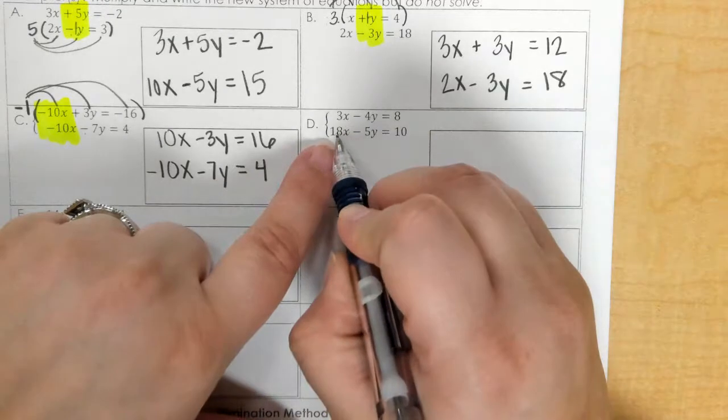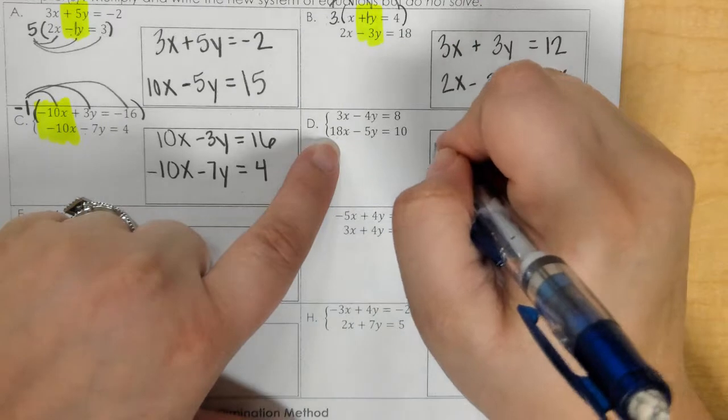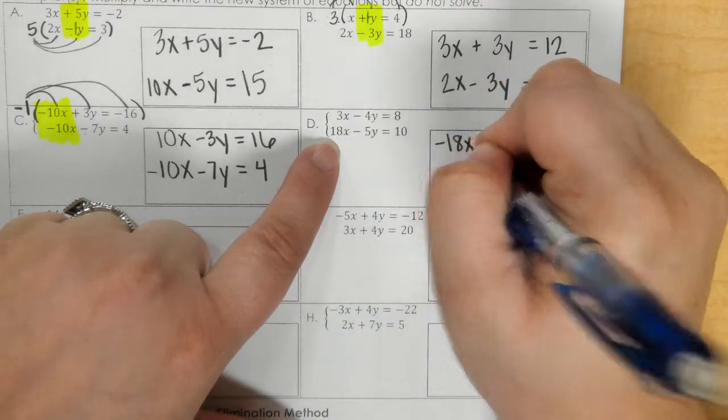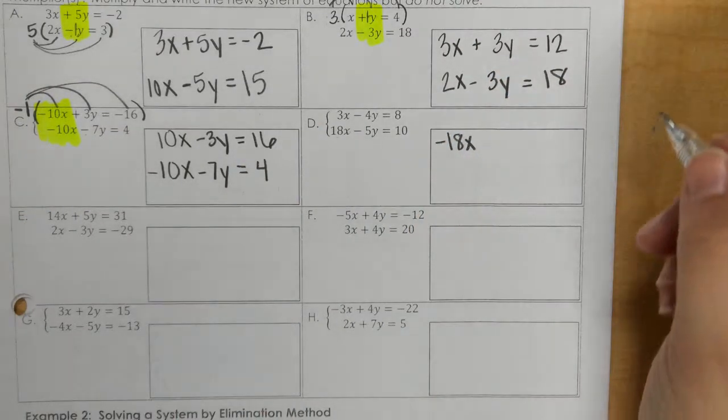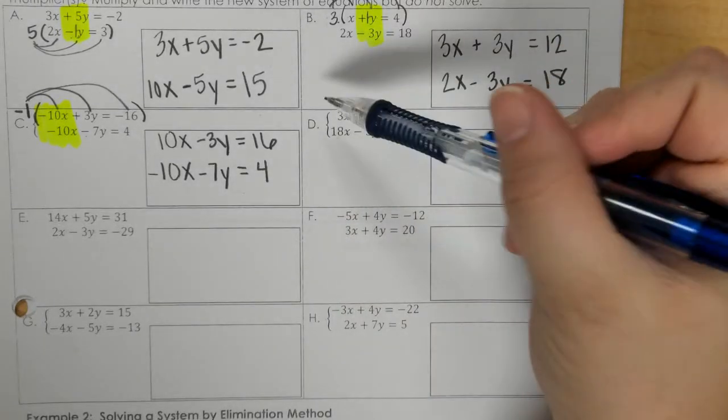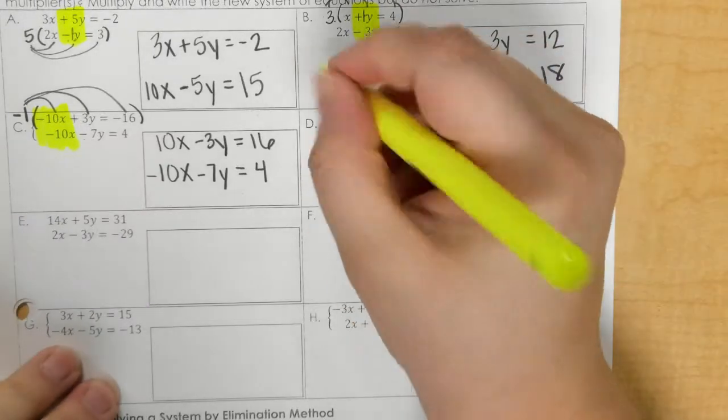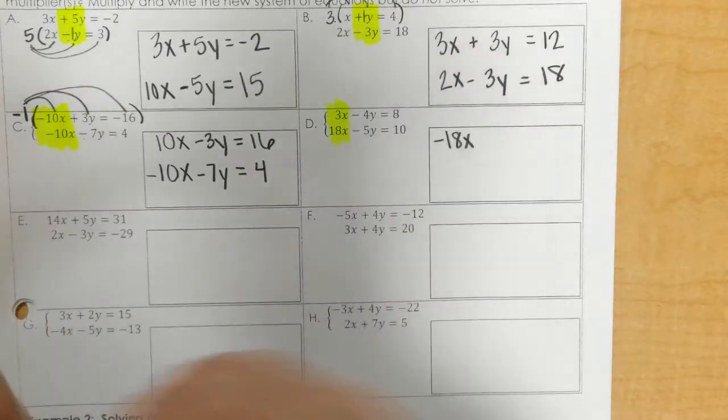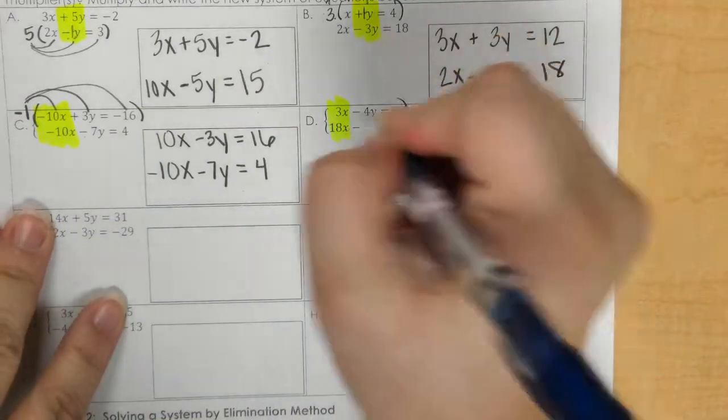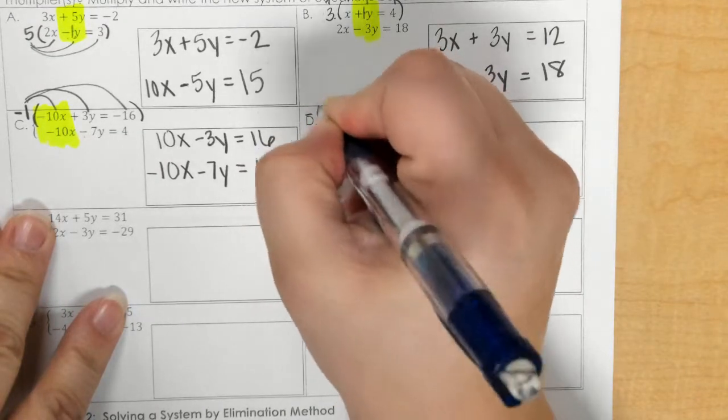And so my goal is to make that opposite 18, which would be negative 18. So now I'm going to say, what times 3 gives me negative 18? And that would be negative 6.